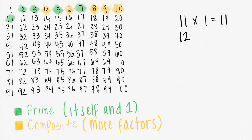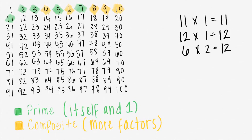12 times 1 equals 12, but so does 6 times 2 equals 12, and so does 3 times 4 equals 12. That means that 12 is definitely composite.